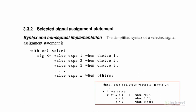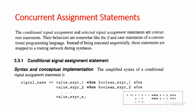Another is with-select. This is also a concurrent statement. We can see an example: R will have A plus B plus C when the value of SEL is 00; R will have A minus B when the value of SEL is 10; and when others condition, C plus 1 will be transferred to R. The syntax is: with SEL select — the value of SEL is checked against choice 1, choice 2, choice 3, and a when-others condition. SIG will have value expression 1 when choice 1 matches.